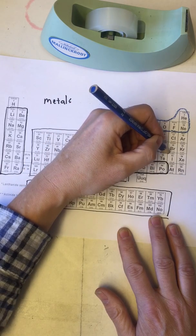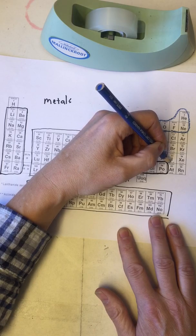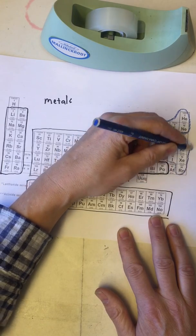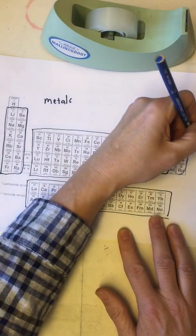Selenium, bromine, iodine, so forth and so on, all these ones over here on the right side. So these are the nonmetals.